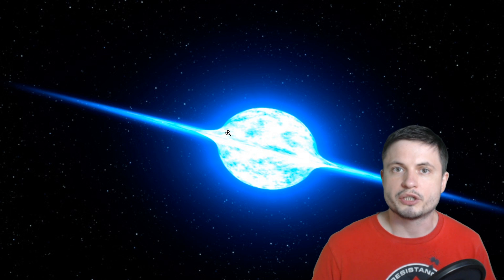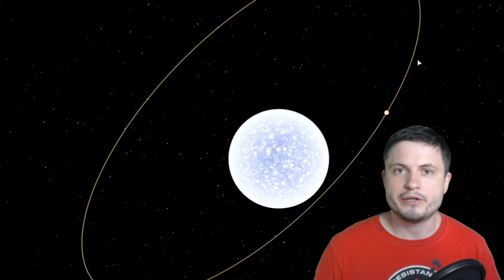So the gravity effects at the poles are much higher. And according to the so-called von Zippel's theorem, because of the changes in gravity, or because of the lower gravity, the temperature at the equator is going to be much lower than the temperature at the poles. Higher gravity, more temperature. And the temperature difference here is quite dramatic. It's about 800 degrees Celsius, which creates very interesting effects.